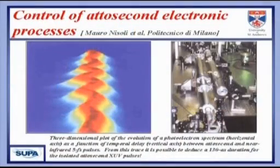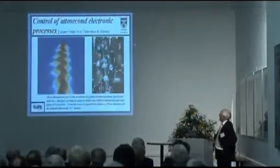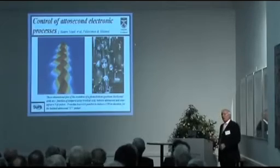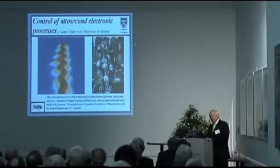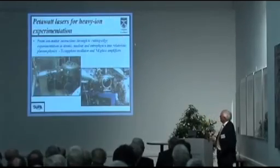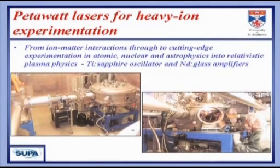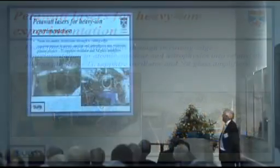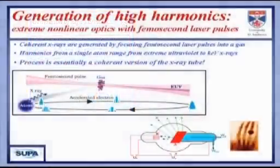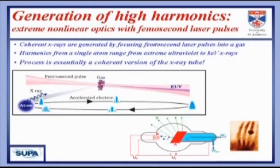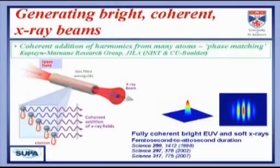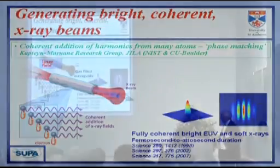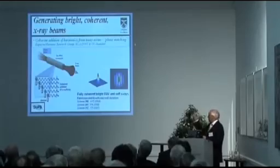A photoelectron spectrum taken at the Polytechnic in Milan by Nisoli shows you can understand photoelectrons produced by attosecond UV pulses, with a resolution deduced of 130 attoseconds — 130 × 10⁻¹⁸ of a second. You can do marvellous work in ion-matter interactions, combining titanium sapphire oscillators with neodymium glass amplifiers, and you can do extreme nonlinear optics by taking femtosecond pulses through gas atoms — rather than Röntgen's incoherent x-rays, you can now have coherent x-rays for holography. This is from Margaret Murnane and Henry Kapteyn's group at JILA/NIST in Colorado.